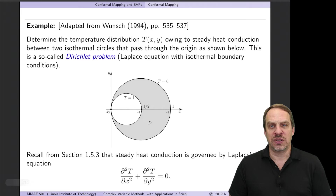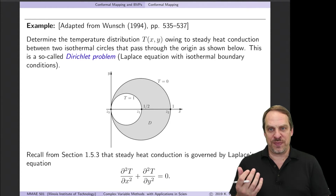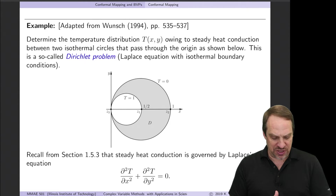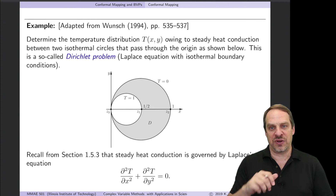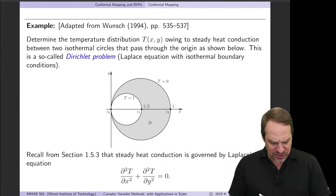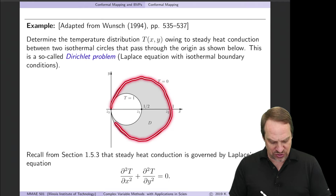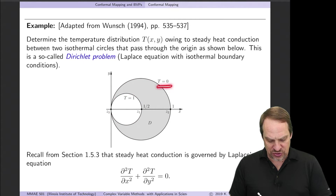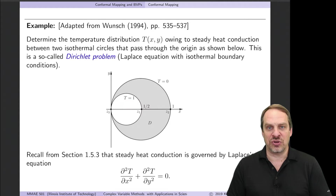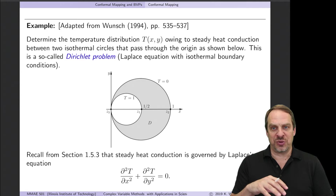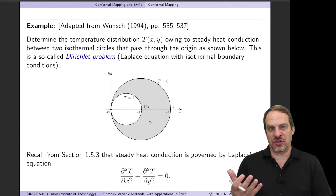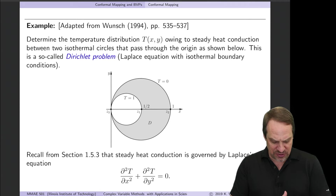Let's look at a fairly detailed example illustrating how we use conformal mapping to solve Laplace's equation in relatively complex domains. This is a Dirichlet problem — governed by Laplace's equation with boundary conditions specifying the dependent variable around the boundary. The shaded domain is bounded by two circles: a larger and a smaller circle. On the larger circle the temperature is zero; on the smaller circle the temperature is one. This is couched in terms of steady heat conduction, but it could equally be an electrostatics or potential flow problem — we're just solving Laplace's equation.